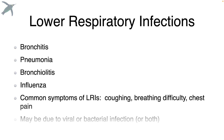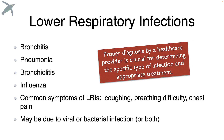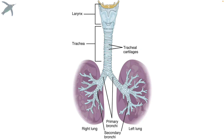The lower respiratory tract is defined this way mainly for clinical purposes. Symptoms of infections here include coughing, difficulty breathing, and chest pain. What we've got here mainly are a lot of tubes which branch repeatedly, held open with cartilage — we do not want these tubes to collapse.